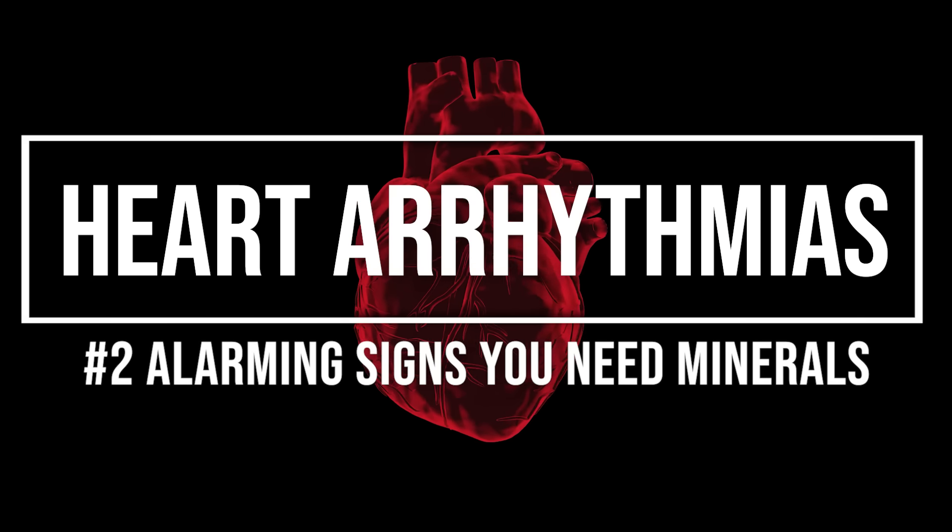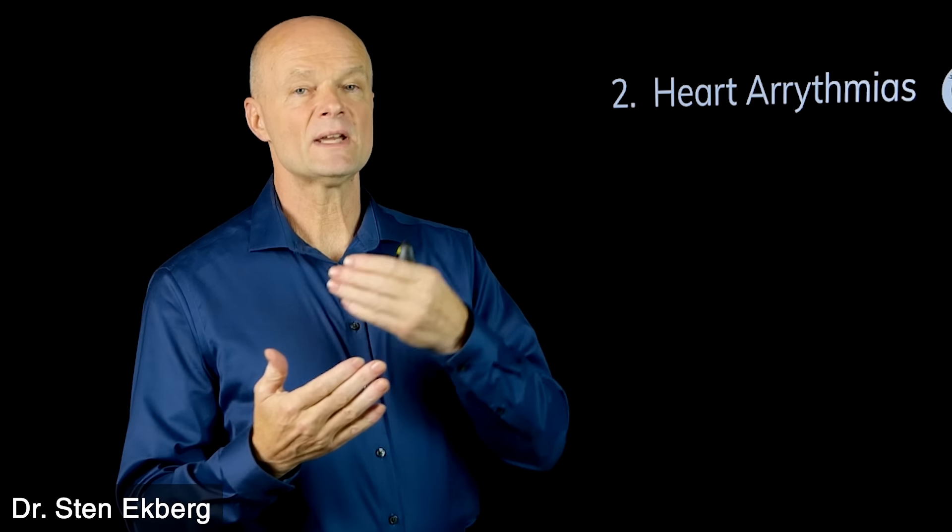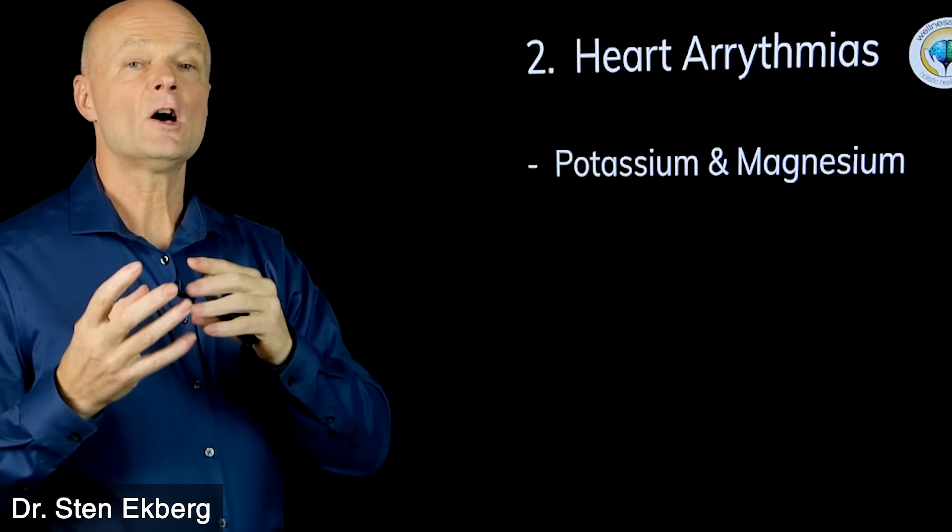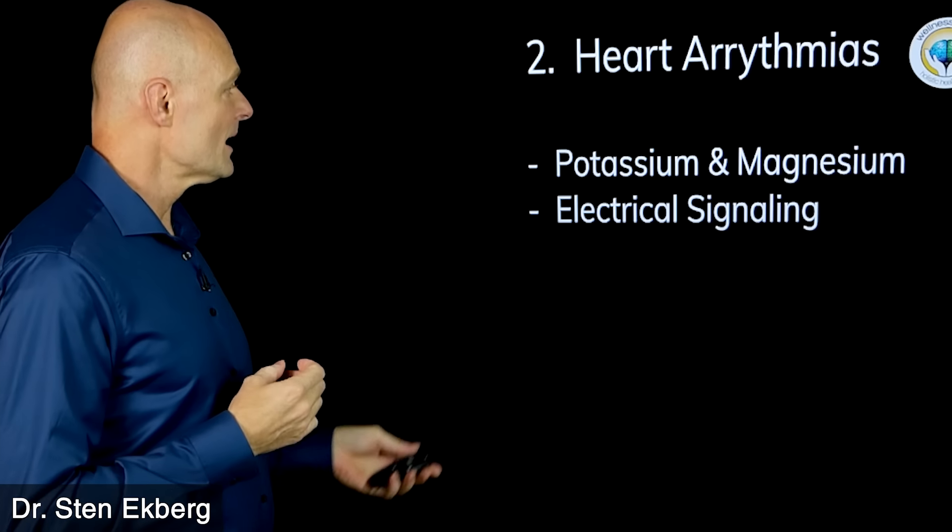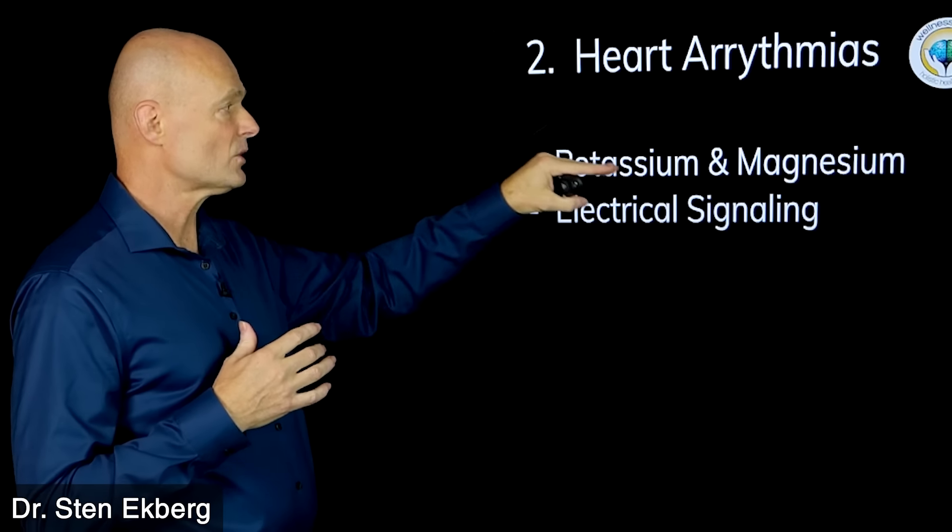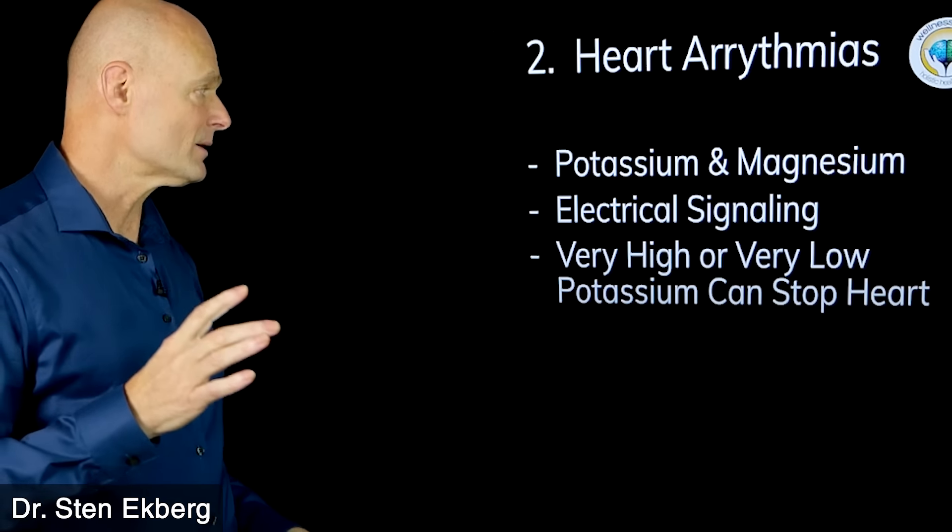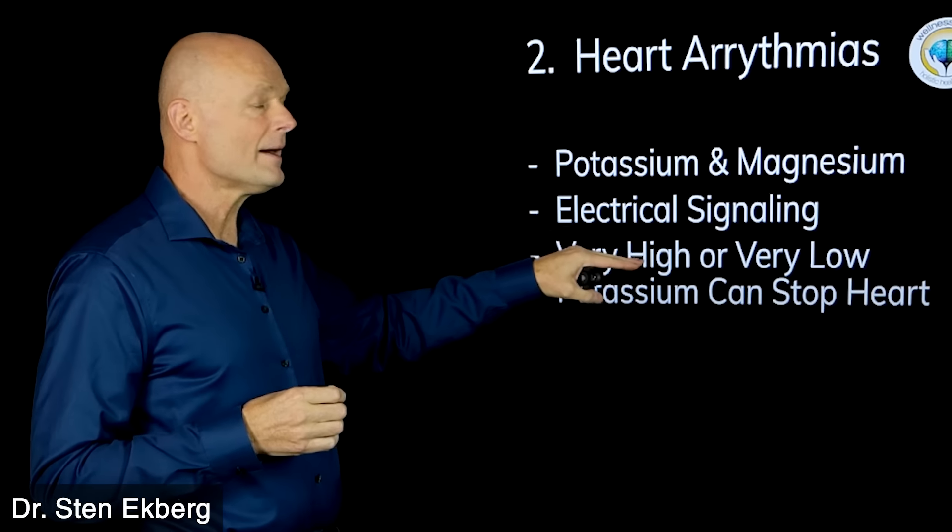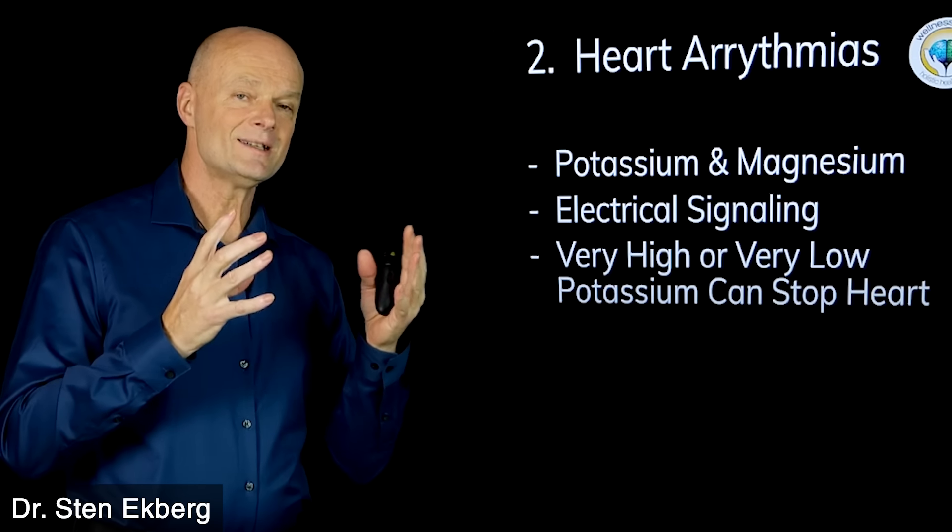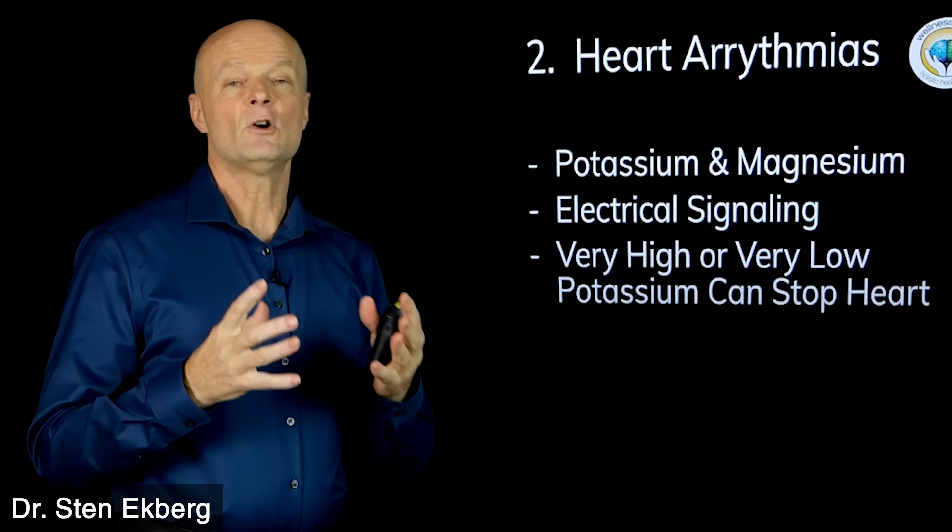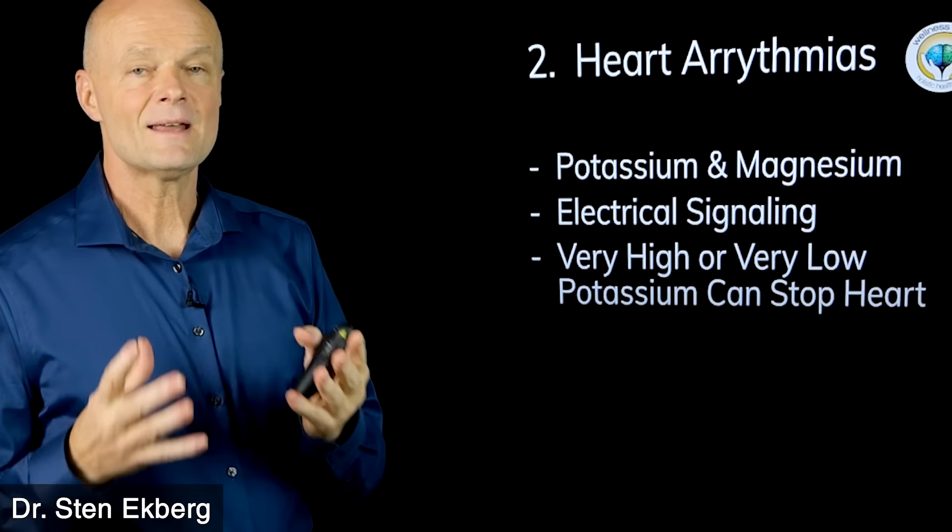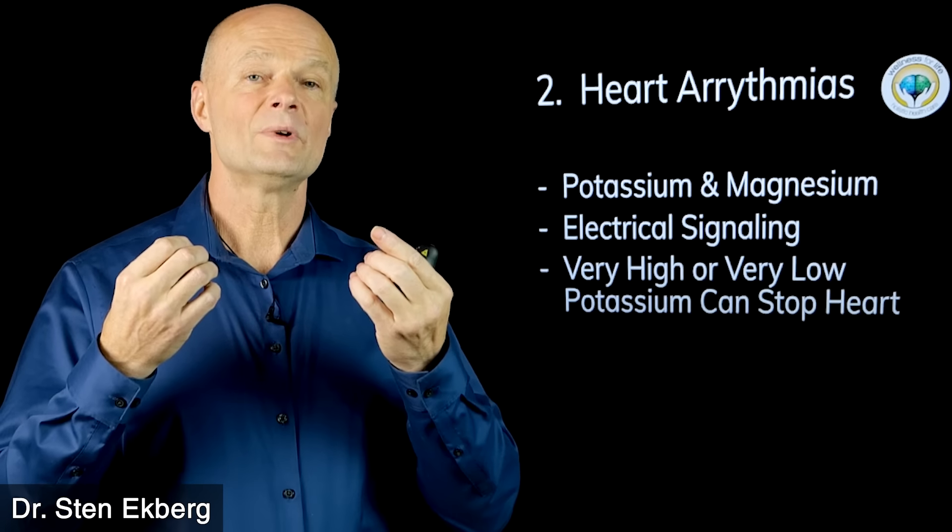Symptom number two are heart arrhythmias, which means that you either have a pounding, fast, racing heart, or you notice that the heart skips a beat, it's just irregular. Minerals are super important, especially potassium and magnesium, in regulating the heart rhythm and producing that muscle contraction. When it comes to potassium, they monitor very closely in diabetics, in heart patients, and kidney patients, because very high or very low levels could not just disturb the rhythm but could actually stop the heartbeat altogether. You could go into cardiac arrest.